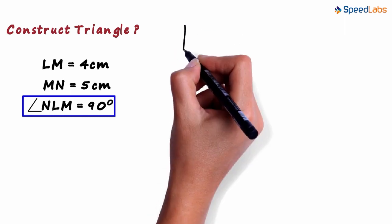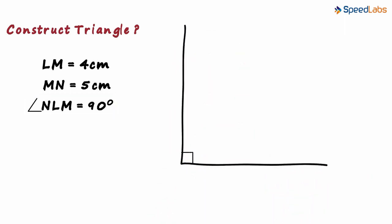The 90 degrees angle will look something like this. The vertex of the angle is point L. So this will be point L.